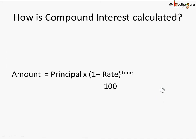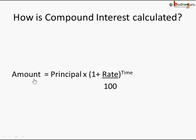The compound interest formula gives the final amount as: Amount equals Principal into bracket 1 plus Rate of Interest by 100, raised to the power of Time, which is the duration of the loan or deposit. The compound interest itself can be calculated easily by subtracting the principal from this final amount.